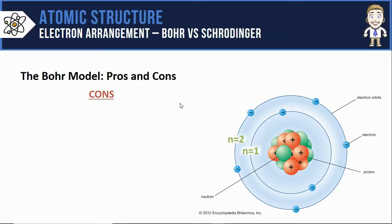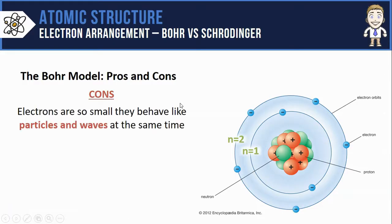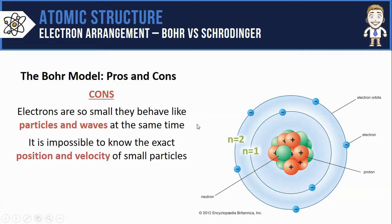But there are some definite downsides too. Electrons are so ridiculously small that they're not only particles — they're actually particles and waves at the same time. This is called particle-wave duality and it's super weird. For tiny particles like electrons, it's also impossible to know the exact position and velocity of where they're going to be found and how fast they're going. This is called the Heisenberg uncertainty principle.